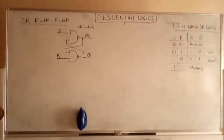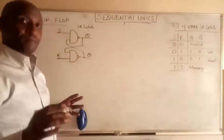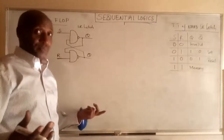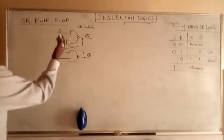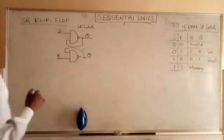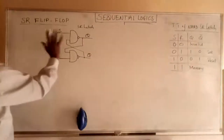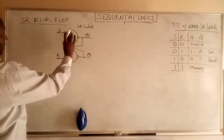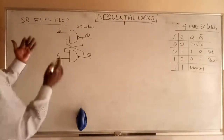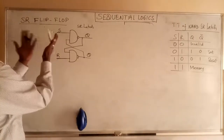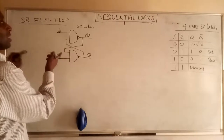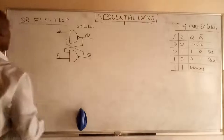Let us see the first SR flip-flop. As I told you, the flip-flop is also a latch because we can use the same circuit of a latch as the flip-flop. Let us use this SR NAND latch — an active low latch from the previous lecture. We can use this as a latch, or we can use this as a flip-flop. What we will need here is a control signal to control this NAND latch.